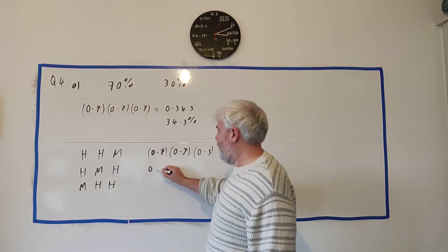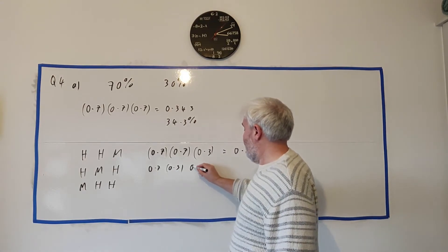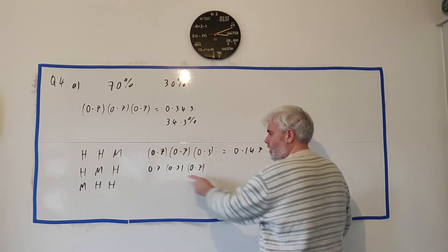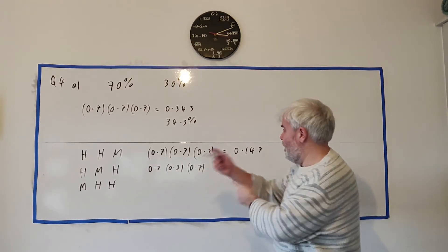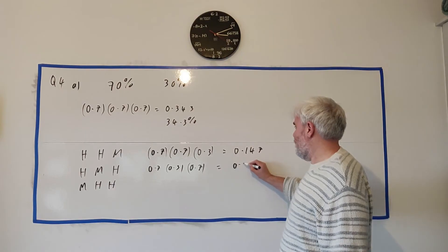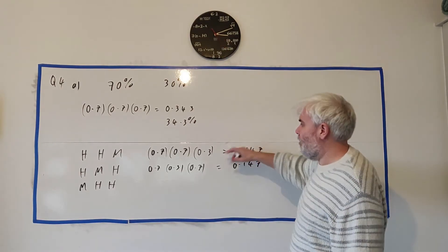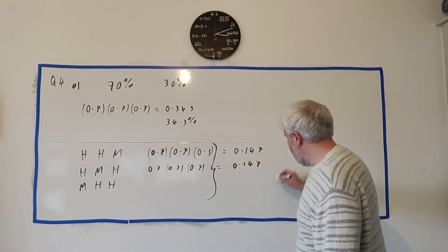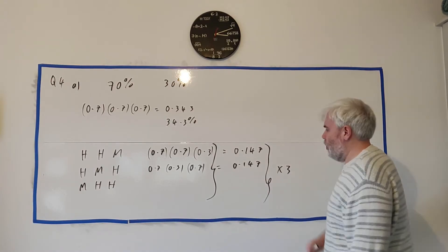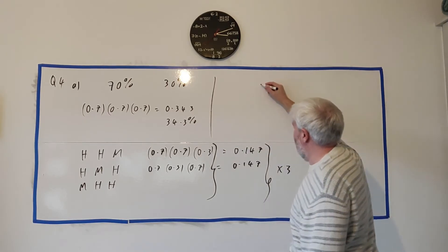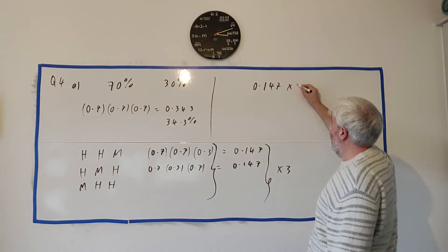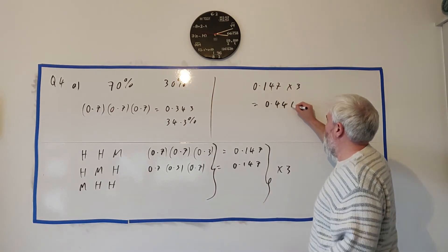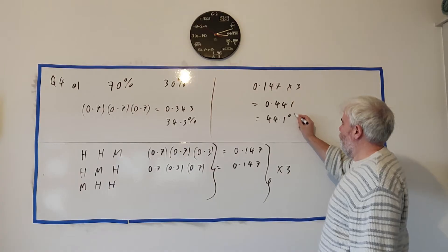Now we can do this two more times and add them together. But look, look what happens. Hit, miss, and hit. This is the same. 0.7, 0.7, 0.3, 0.7, 0.7, 0.3. Multiply doesn't care which order you do it in. You're going to get the same answer. And you're going to get the same answer again. So instead of doing the second and the third one, all you have to really do is realize there was three of them times three. So the probability that he makes two of them would be 0.147 multiplied by three, which is equal to 0.441, or you could write 44.1%.